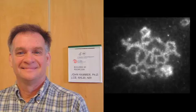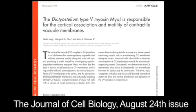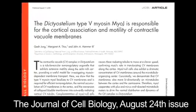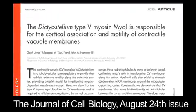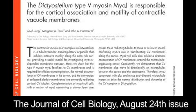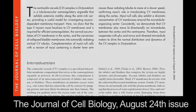Presumably there's some kind of radial organization of the actin around the fusion pore, in which the barbed ends are primarily facing away from the fusion pore, providing tracks for this radial movement. You can read more about how myo-J controls the cortical association and motility of contractile vacuoles in the August 24th issue of the Journal of Cell Biology.